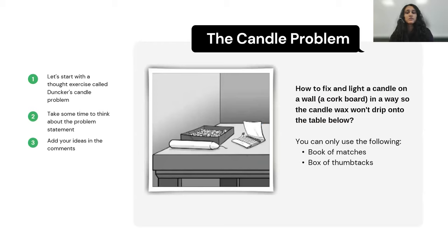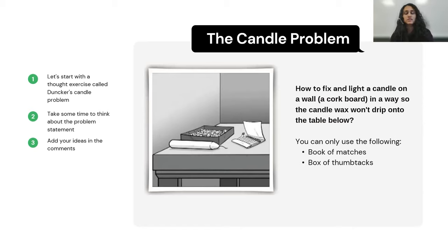Let's first start with a thought exercise called the Dunker's Candle Problem. Imagine you have the following objects at hand: a candle, a bunch of matches, a box containing thumbtacks or bulletin board pins, and a wall or a corkboard. All of these are placed on a table.